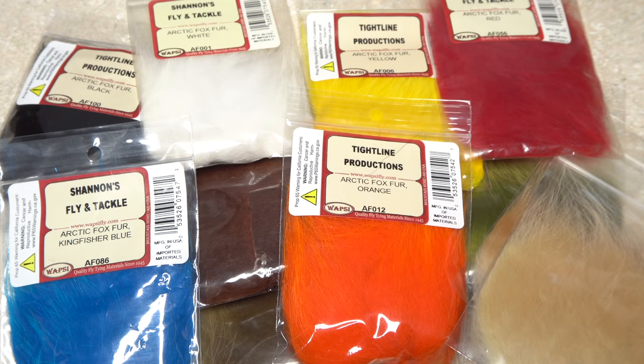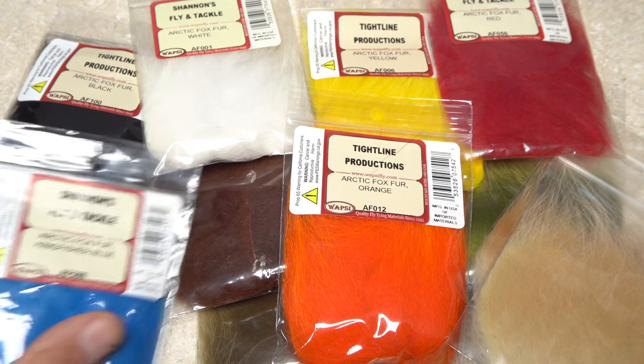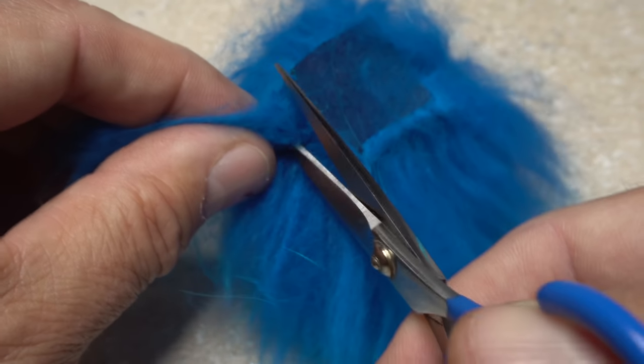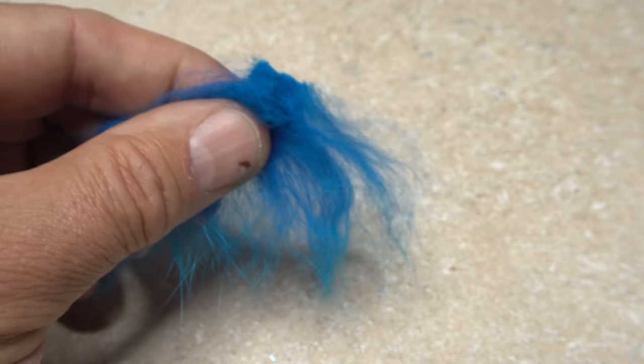Arctic fox comes in a wide range of colors and is a great tailing material. Here I'm going to use Kingfisher Blue. Snip an ample clump free from the hide. It's amazing how much fur actually comes on one little patch.